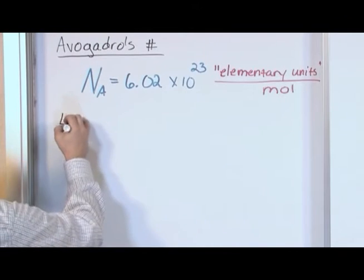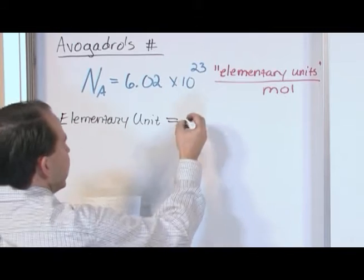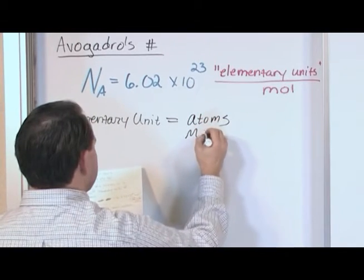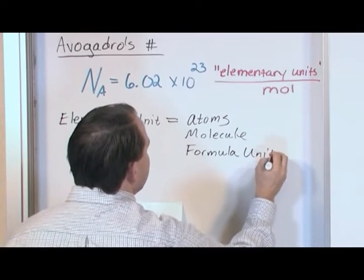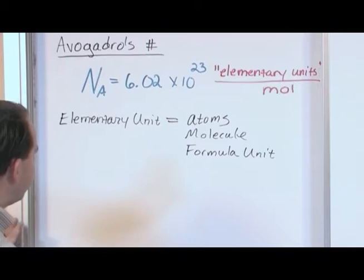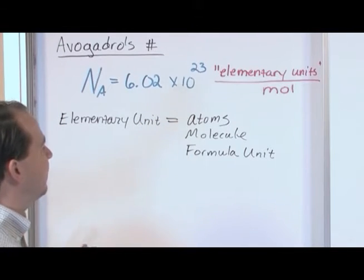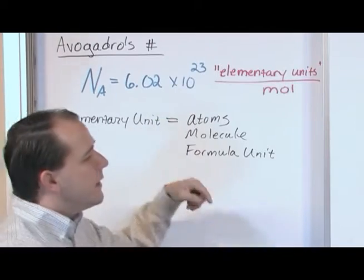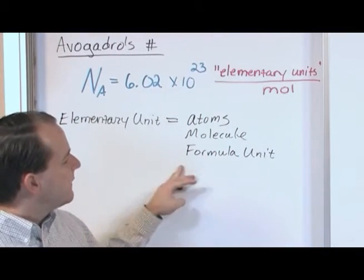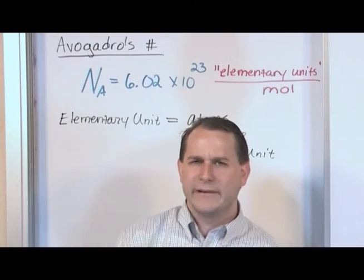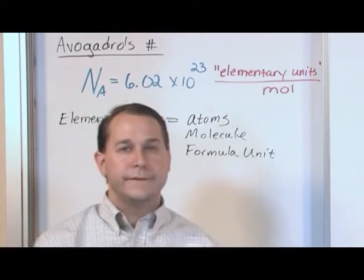The bottom line is an elementary unit can be lots of things. It can be an atom, it can be a molecule. If it's a molecular compound, it could be a formula unit. So if you're talking about atoms of hydrogen or atoms of lithium or something, then when you have a mole of it, you'll have 6.02 times 10 to the 23rd atoms of lithium. If you're talking about a molecule of some kind like water and you have a mole of water, you'll have 6.02 times 10 to the 23rd molecules of water. If you're talking about something that's an ionic compound like table salt, like sodium chloride or calcium chloride, then you would say one mole is 6.02 times 10 to the 23rd formula units of calcium chloride or whatever.